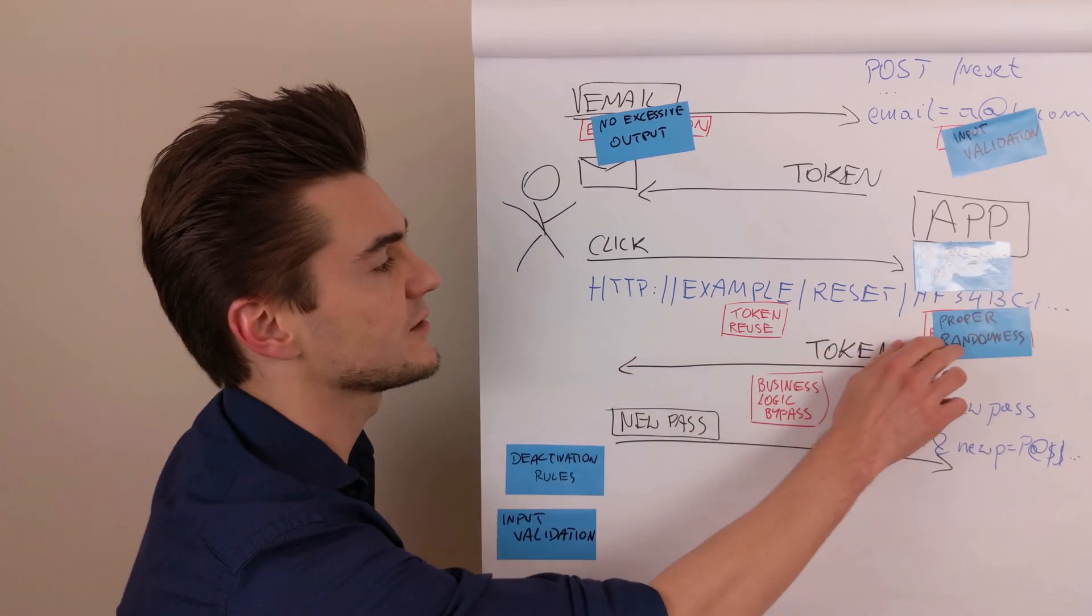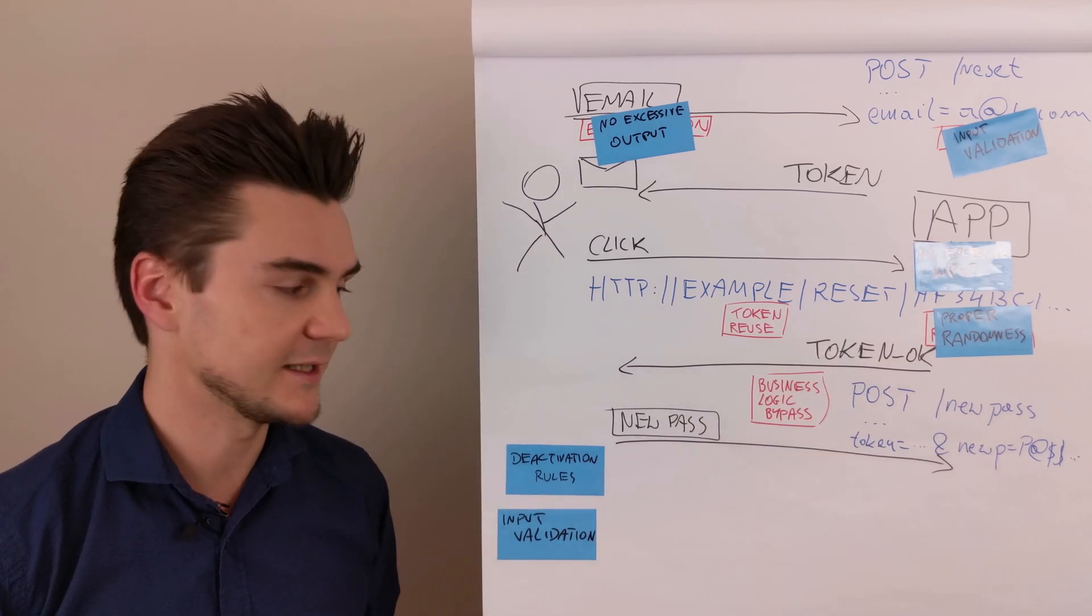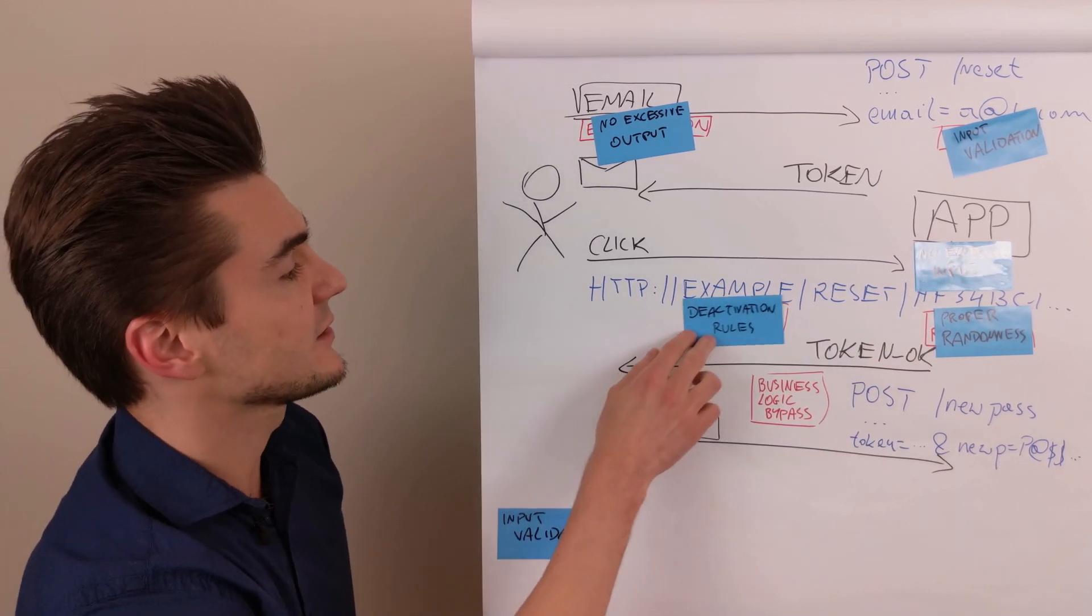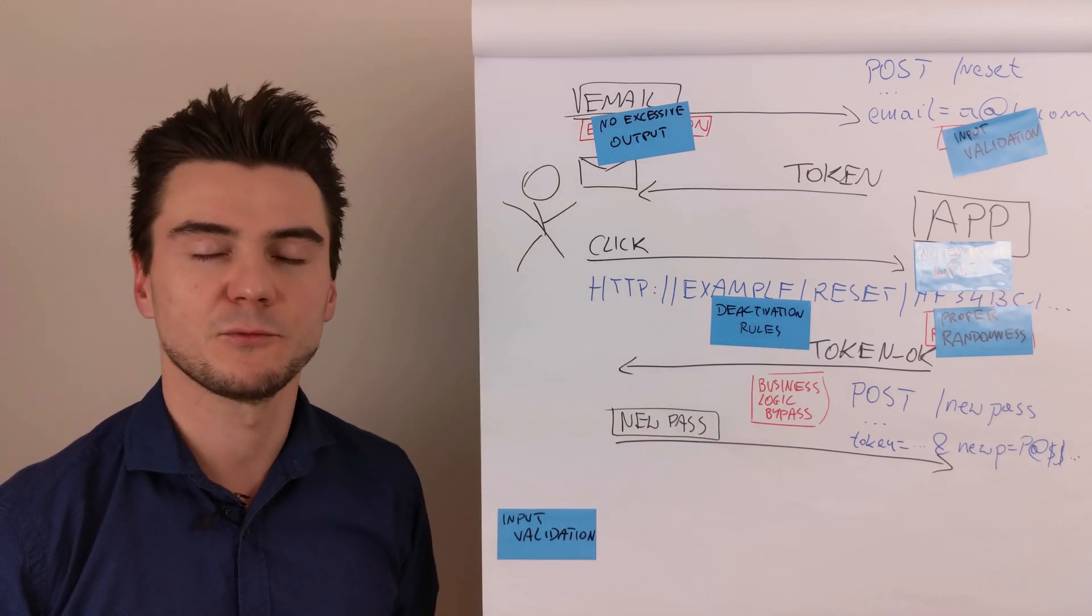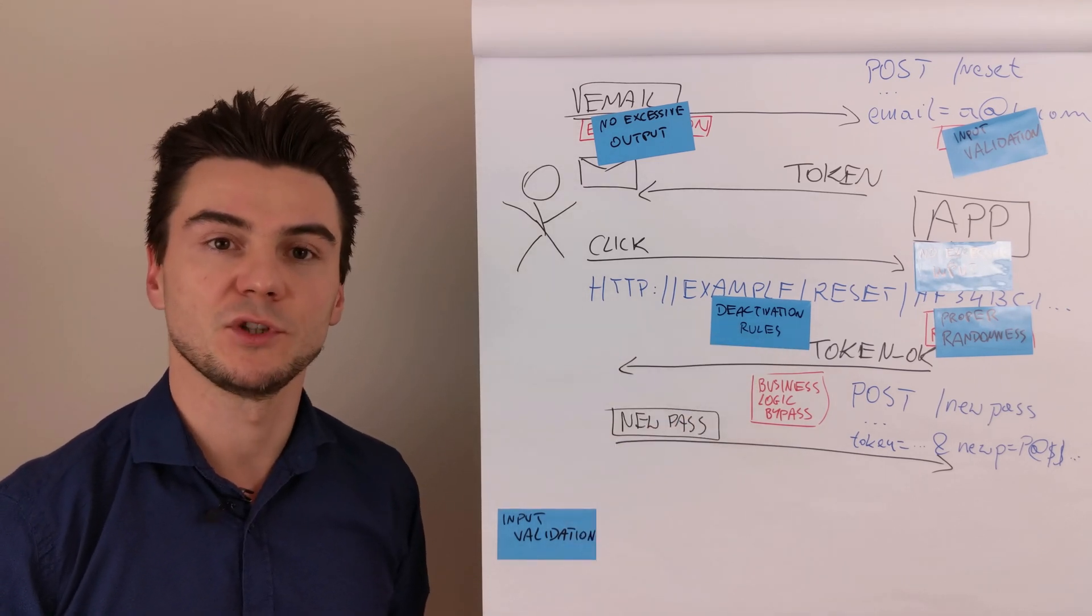Proper randomness, such as UID version 4 to prevent guessing the tokens. The activation rules. So expiration time, one hour, 24 hours, and it should not be used twice.